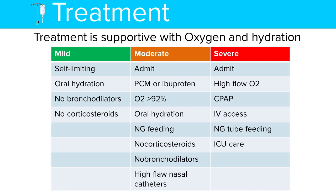In moderate cases, you may need to admit the patient and administer antipyretics such as paracetamol. Oxygen saturation should be maintained above 92% using a face mask or high-flow nasal catheter. Oral hydration should be encouraged, and if the patient cannot take oral fluids, nasogastric feeding can be used. Corticosteroids and bronchodilators are not indicated.